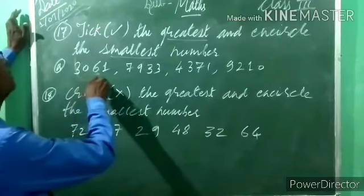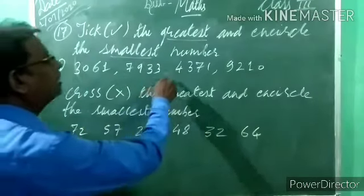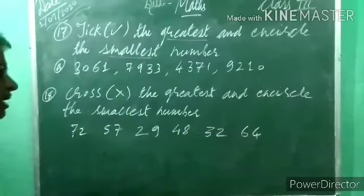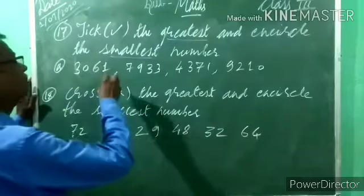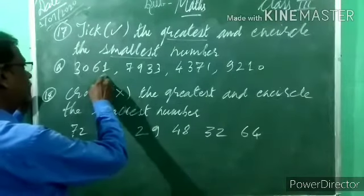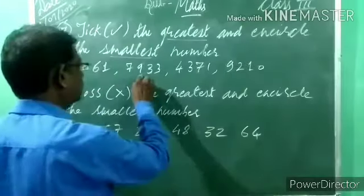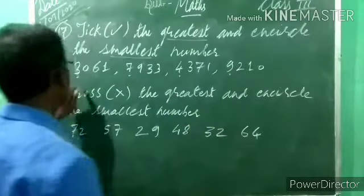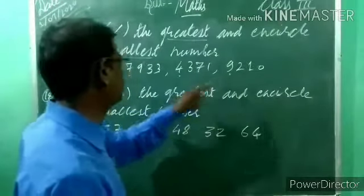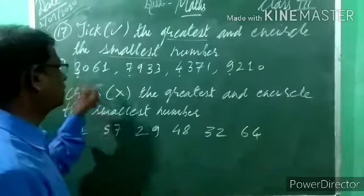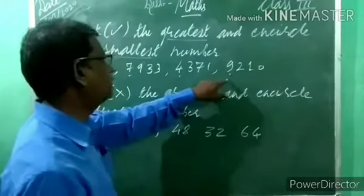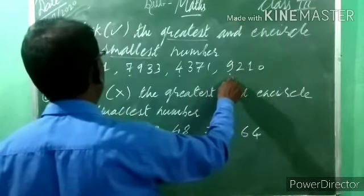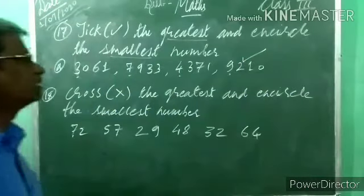Look at this — how to read? 3,061; 7,933; 4,371; and 9,210. All are four-digit numbers. Which one is the greatest? Look at the thousands place: 3, 7, 4, 9. Which is the greatest? From these, 9 is the greatest. So among the four numbers, 9,210 is the greatest number. Put a tick for this number — this is the greatest.